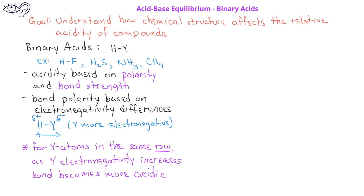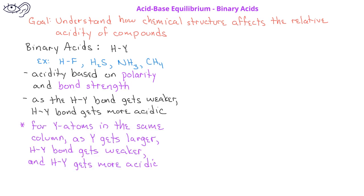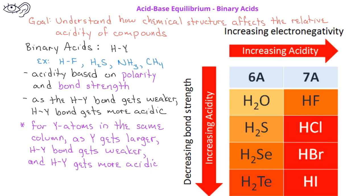But bond strength also can impact the acidity of a binary acid. As the HY bond gets weaker, the compound becomes more acidic, because the hydrogen is more likely to be broken away from the Y. As the Y atom gets larger in size, the bond weakens, and so the compound becomes more acidic. This figure shows these two trends between bond polarity and bond strength based on atom size.